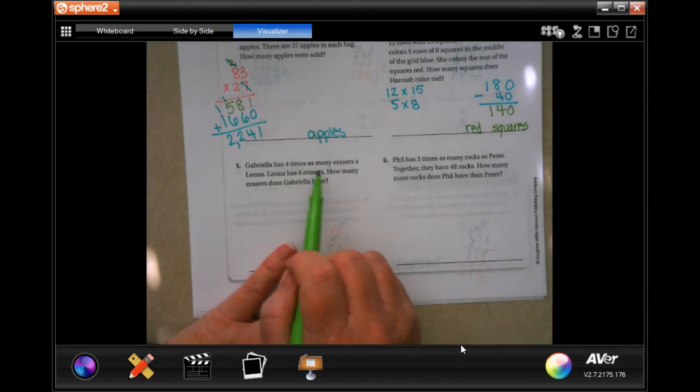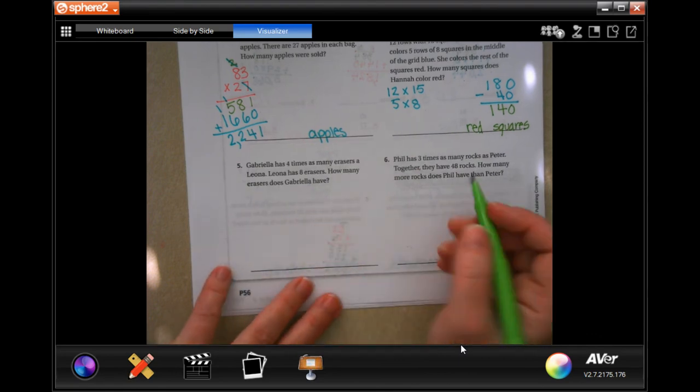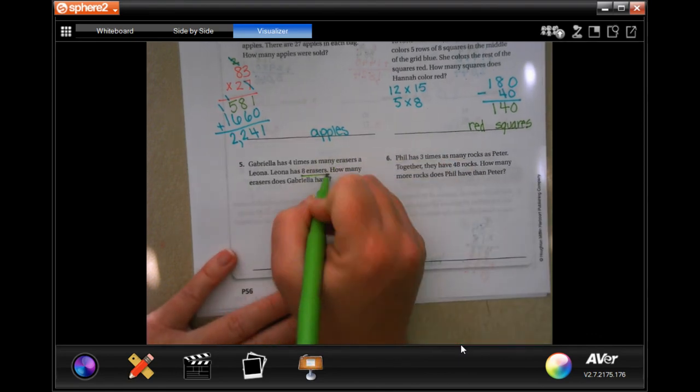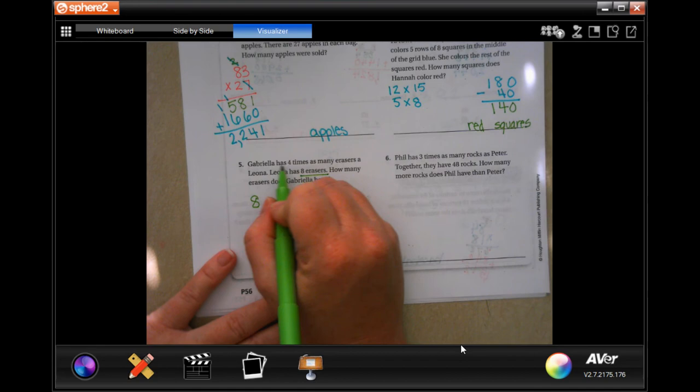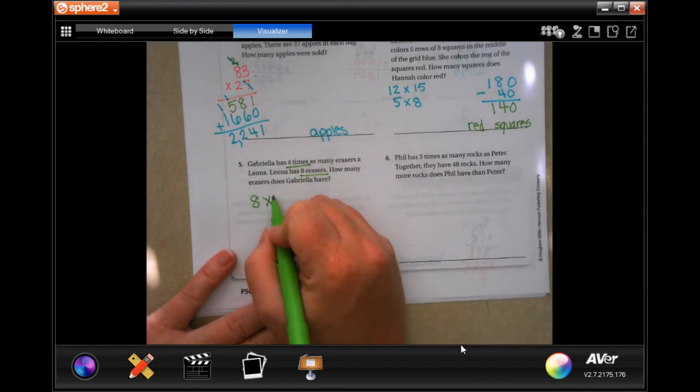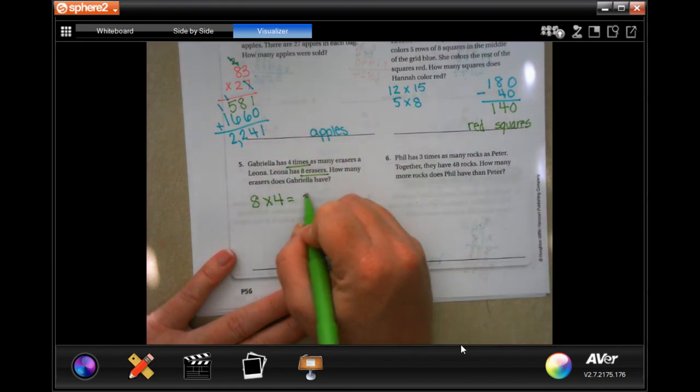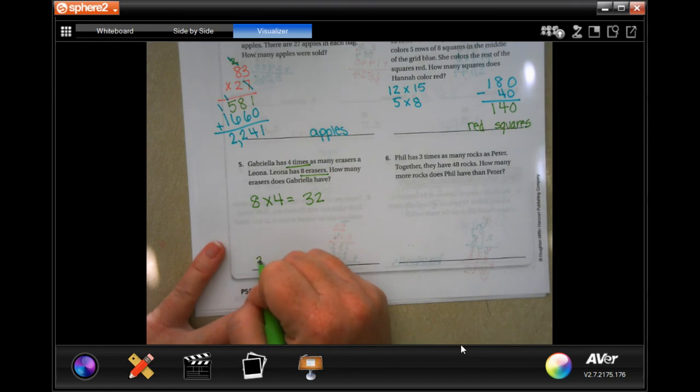Gabriela has 4 times as many erasers as Leona. Leona has 8 erasers. How many erasers does Gabriela have? Well, I told you, Leona has 8, and Gabriela has 4 times as many. Well, 8 times 4 is 32. So it's 32 erasers.